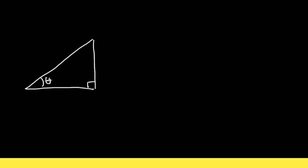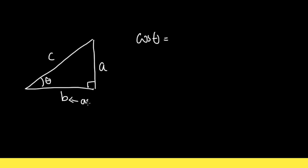Let me label this angle to be theta, and let me label the sides of the right triangle to be a, b, and c. By definition of cosine, it's the adjacent over the hypotenuse. Here is the angle theta, so this side will be the adjacent — that's b. The hypotenuse is the longer side, which is c. So cosine theta from this right triangle will be b over c.